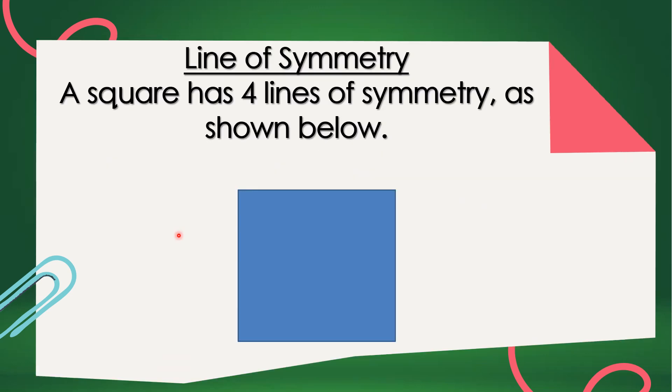First is this. A square has four lines of symmetry as shown below. Let's show it. One, two, three, and four. You see, a square has four lines of symmetry as shown below.